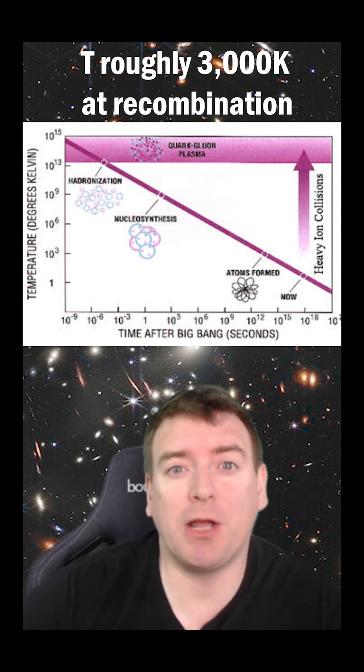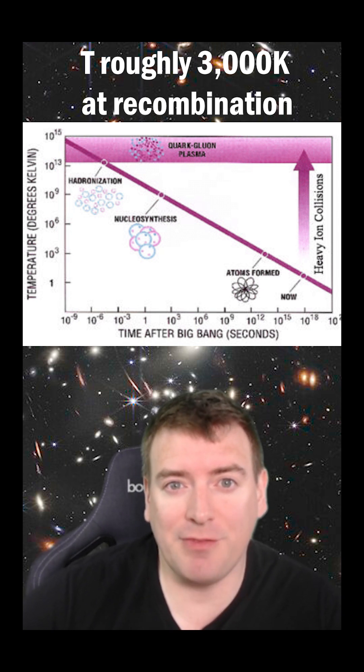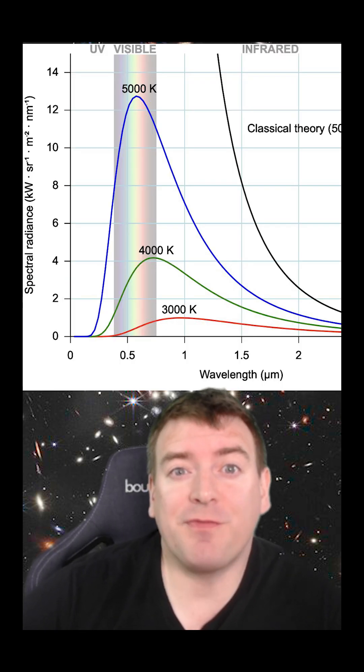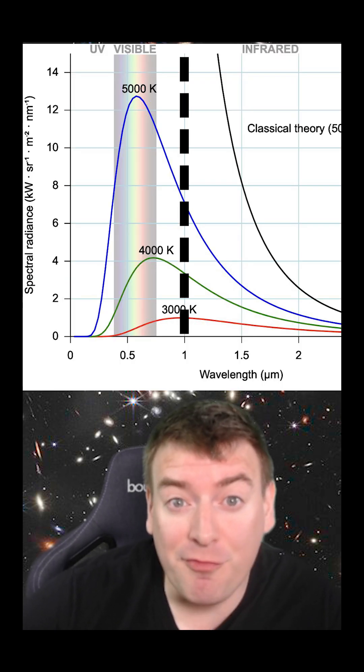If we treat the plasma prior to recombination as a 3,000 Kelvin black body, we can use Wien's displacement law to find the dominant wavelength of light emission from it.